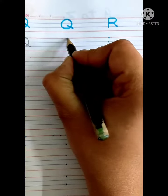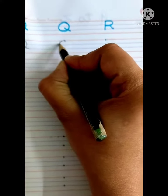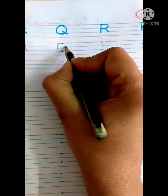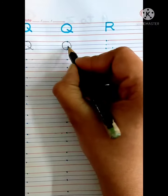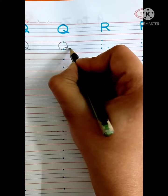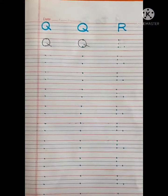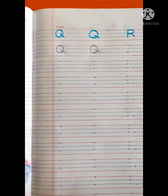Now we will write again. So make a circle on these dots. Like this. Then we will make slanting line. Small slanting line. Like this. This is Q for Queen.